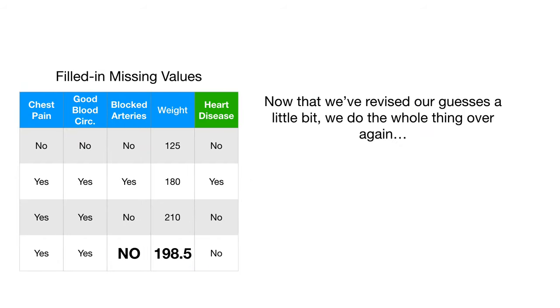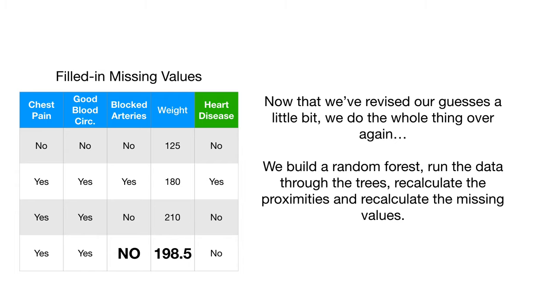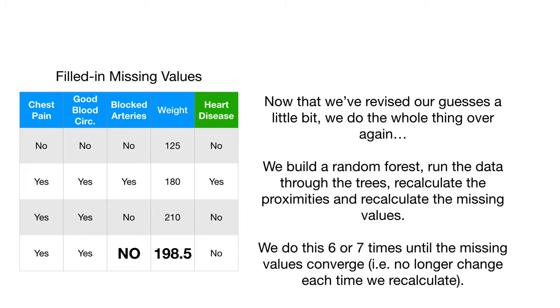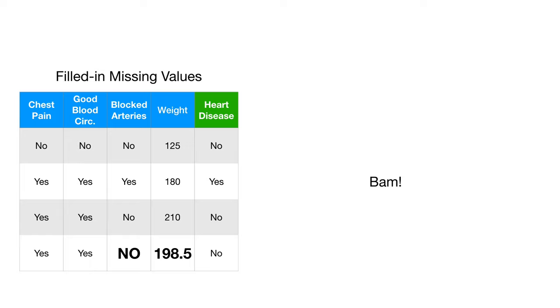Now that we've revised our guesses a little bit, we do the whole thing over again. We build a random forest, run the data through the trees, recalculate the proximities, and recalculate the missing values. We do this six or seven times until the missing values converge, i.e. no longer change each time we recalculate. Bam!